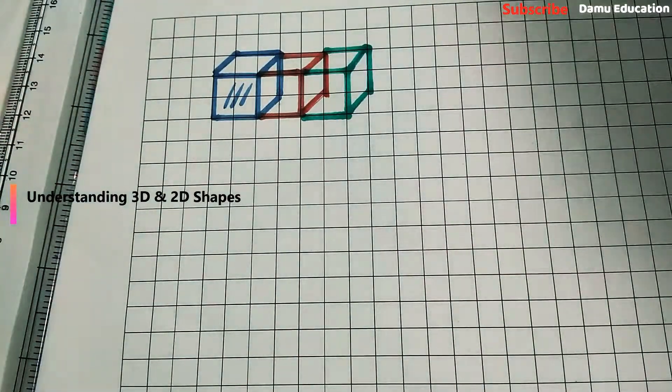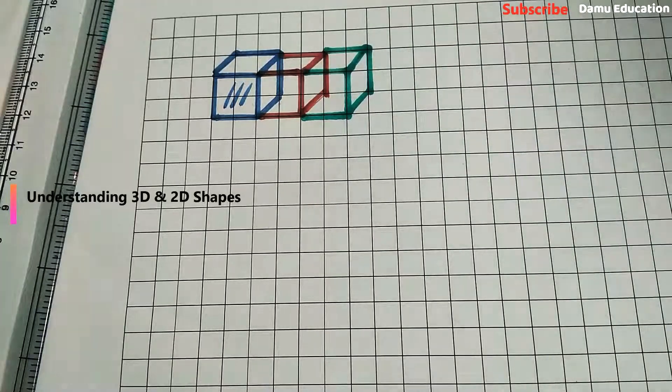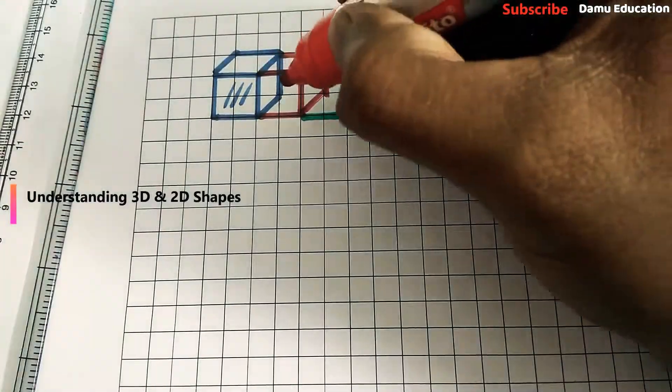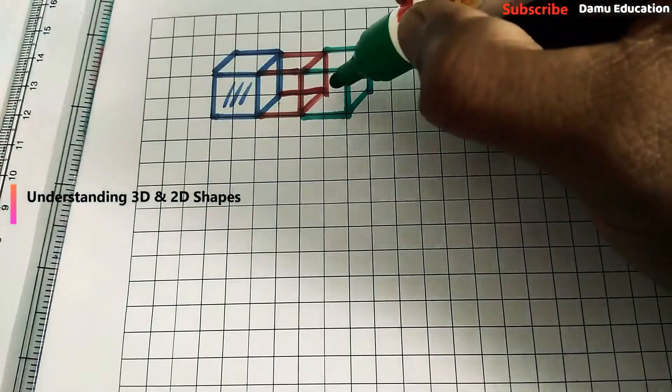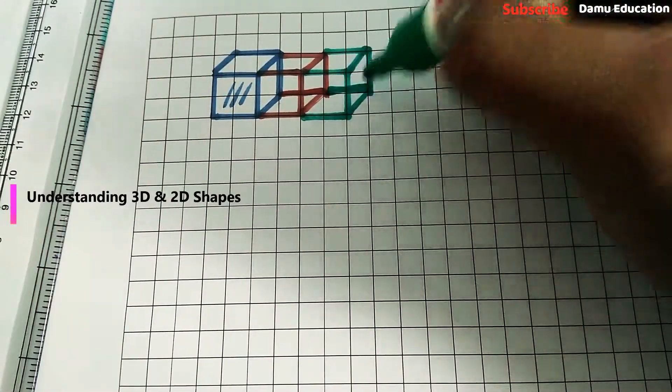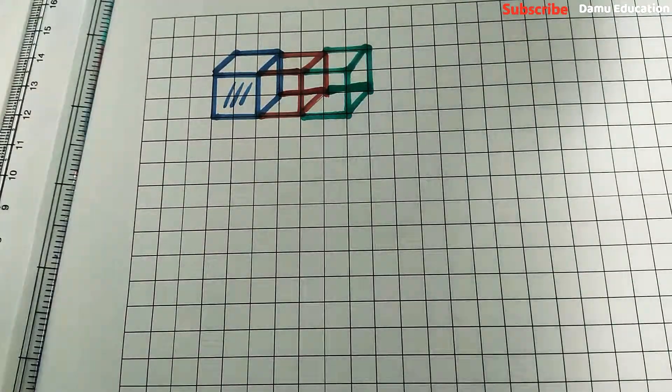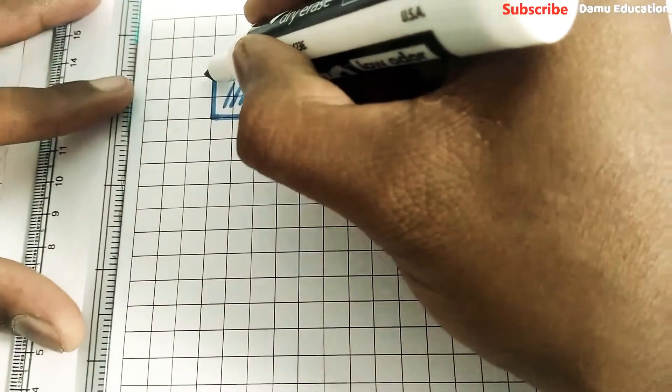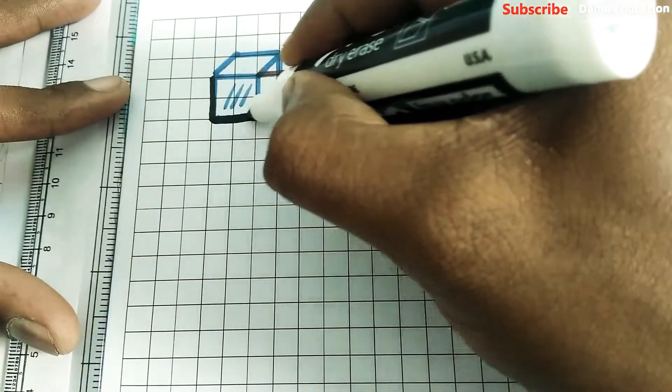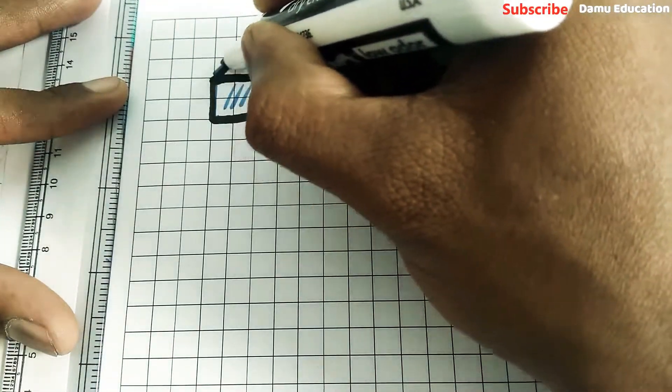We can draw like this also, no problem. But we have to join all the shapes like this. No problem if you join like this also. The cubes are joined. So finally, what is our shape? Cuboid is framing. This is the cube.